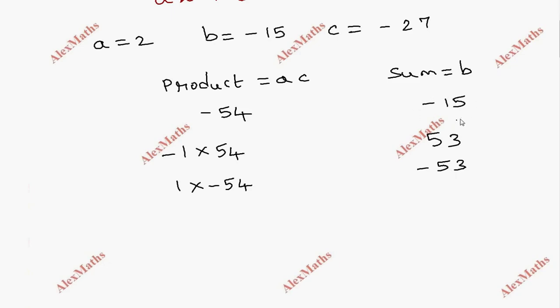So if we look at sum minus 15, we will have a combination of 3 into minus 18. So we will have 3 into minus 18, this is minus 54.